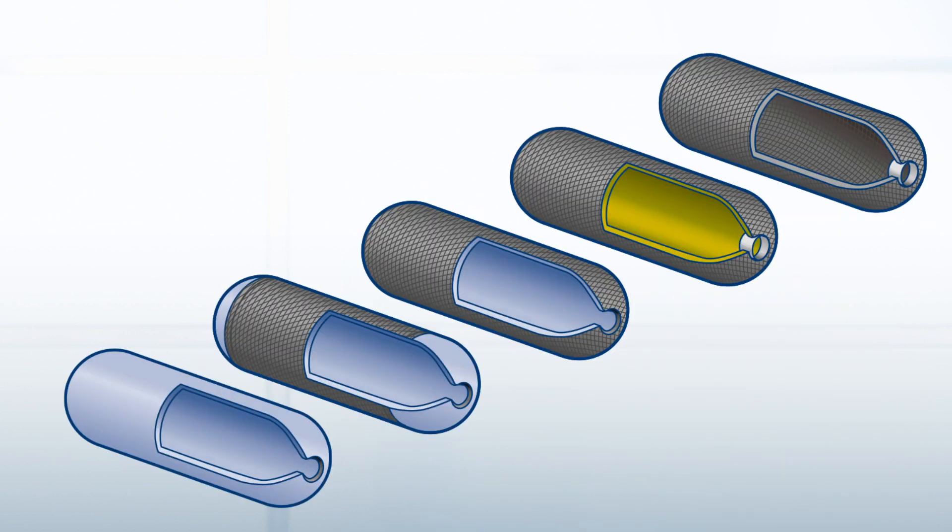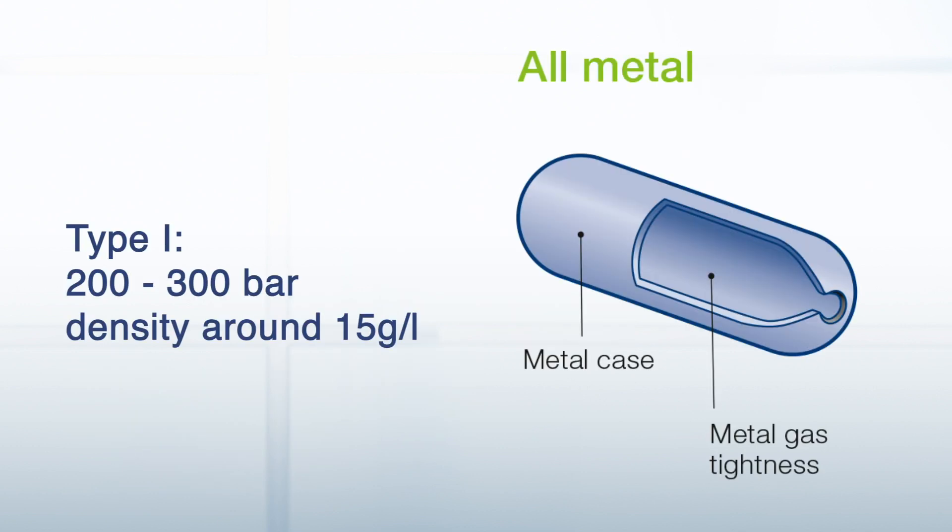There are five different types of gas tanks that can be used both for stationary and mobile applications to store hydrogen. Type 1 is the most common gas tank.